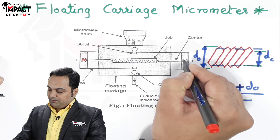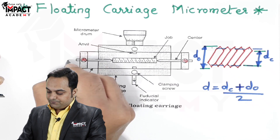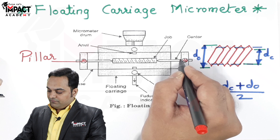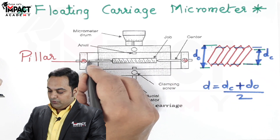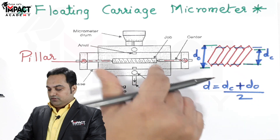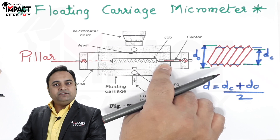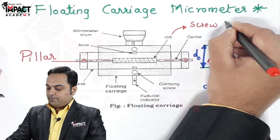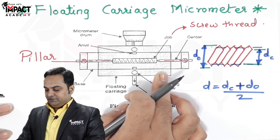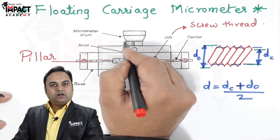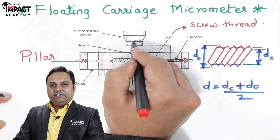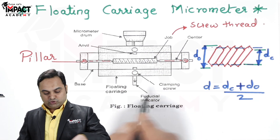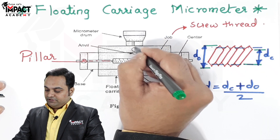The floating carriage consists of two pillars, and on those pillars we have pointed centers. The screw thread is held between these two centers — this is the job, or the screw thread profile, kept between the centers. On one end we have a micrometer drum which gives us the reading, and just opposite to it we have the fiducial indicator.